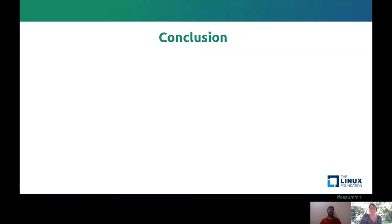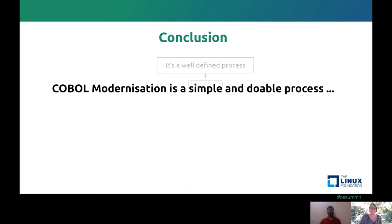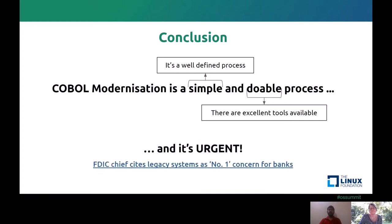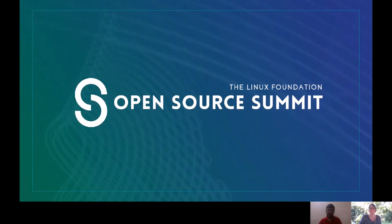The one-line conclusion: COBOL modernization is a simple and doable process. Simple means it's a well-defined process; doable means excellent tools are available. But there's more — this modernization is urgent. The FDIC chief states legacy systems as the number one concern for banks. People across the internet are talking about why COBOL developers and COBOL modernization are urgently needed. The one thing we want to tell the whole world: COBOL modernization is a simple, doable, and urgent process.